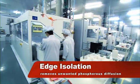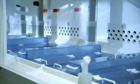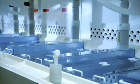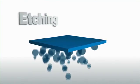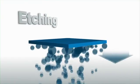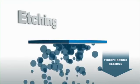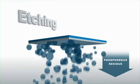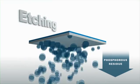Next, unwanted phosphorus diffusion is chemically removed from the edges and rear surface in another patented process. This unique process ensures the solar cells have excellent shunt resistances and higher efficiencies under low-light illumination.